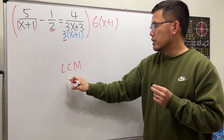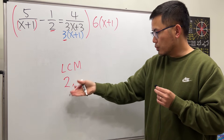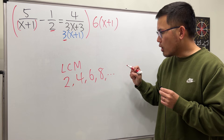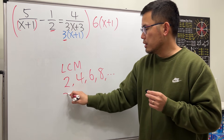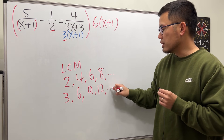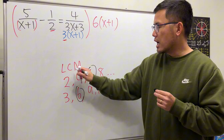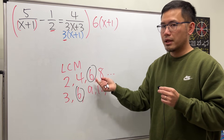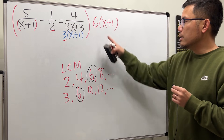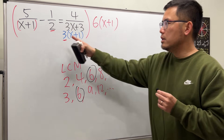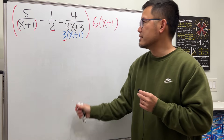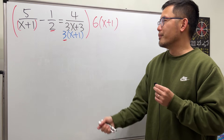Here's how you can get it: start with two — two times one is two, two times two is four, two times three is six, and so on. Then put down three — three times one is three, three times two is six, three times three is nine, and so on. Six is the least common multiple because it's the first number that appears in both lists. This right here is the lowest common multiple for the denominators.